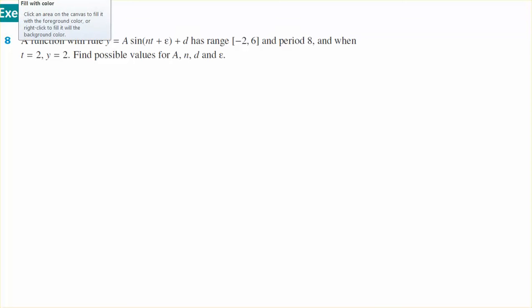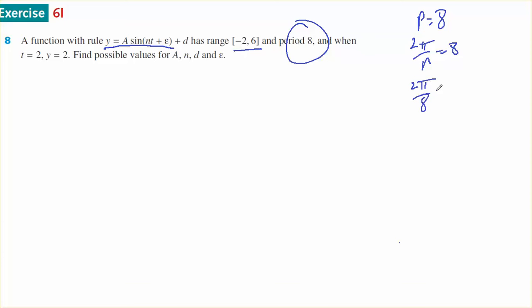This is for Year 12 Methods, Chapter 6, Exercise 6i, Question 8. If this is the rule, and this is the range, and this is the period, if the period equals 8, then 2π on n equals 8. So 2π on 8 equals n, which means n equals π on 4.